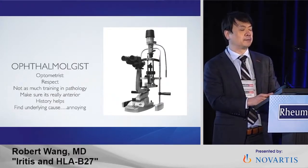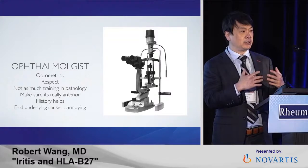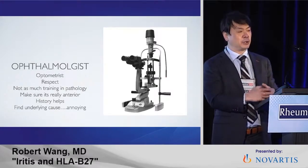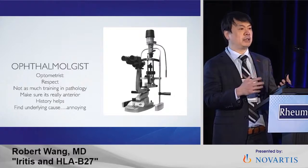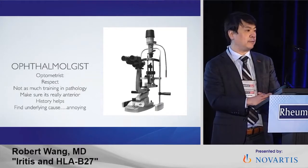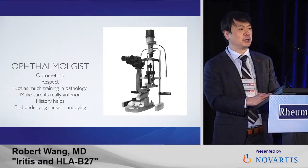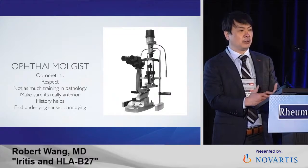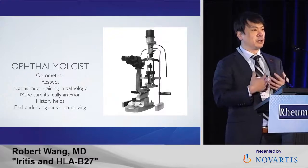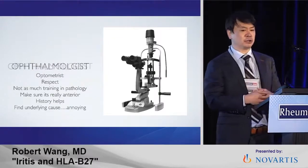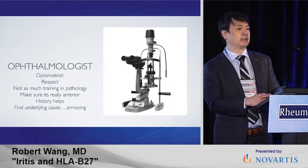Really make sure the history is there and that it's an anterior uveitis. Inflammation in the back of the eye actually doesn't hurt — there are no pain fibers in the back of the eye. When you get a posterior pan-uveitis, you get a painless loss of vision. The only pain fibers inside the eye are in the iris and ciliary body. When you get an iritis, the eye turns red, it looks like a pink eye, and they get a loss of vision. The history really helps.